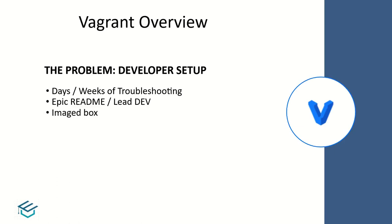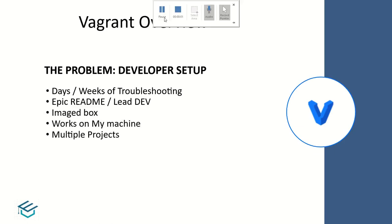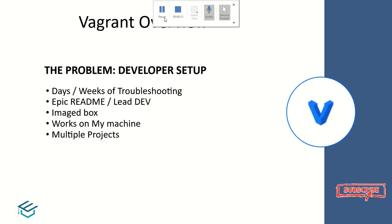You can use an image box with a pre-defined type of program. If you are working with multiple projects, you can use applications across multiple projects. To overcome these issues, you can use Vagrant.